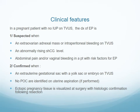We suspect an ectopic pregnancy when there is no intrauterine pregnancy on transvaginal scan, combined with an extra-ovarian adnexal mass, or intraperitoneal bleeding on transvaginal scan, a rising beta-hCG level, and abdominal pain in patients with risk factors. We can confirm ectopic pregnancy when we see an extra-ovarian gestational sac with a yolk sac or embryo on transvaginal scan, no products of conception on uterine aspiration if performed, and when an ectopic pregnancy is visualized at surgery with histologic confirmation following resection — that is the final way to confirm.